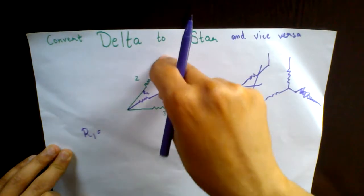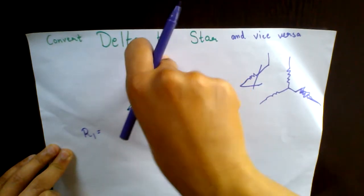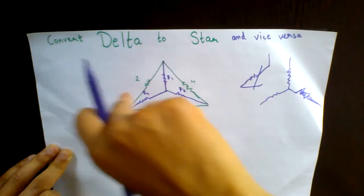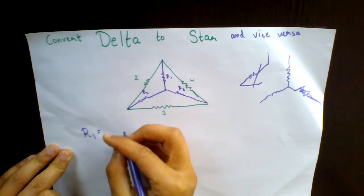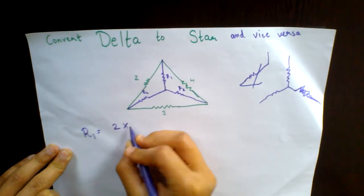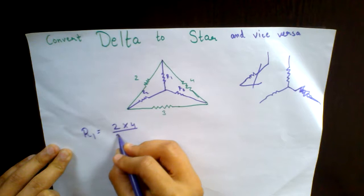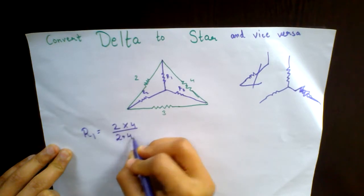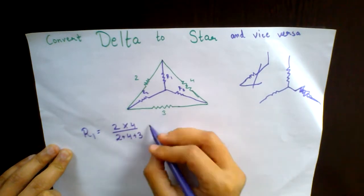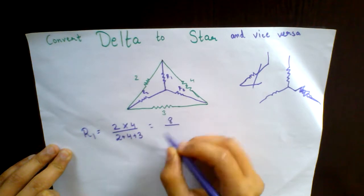See, R1 is over here, basically you bring it over here and then multiply by the total. So it is 2 into 4 upon 2 plus 4 plus 3, which is 8 upon 9.